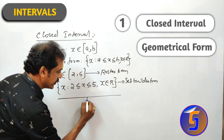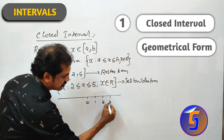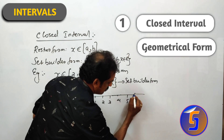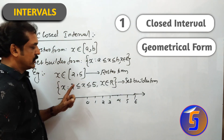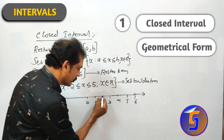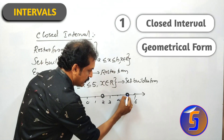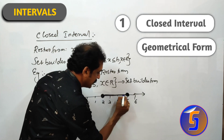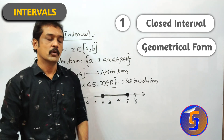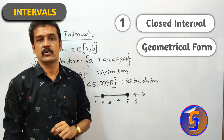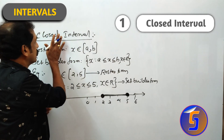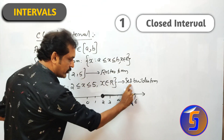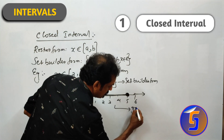This is the geometrical form. We draw a number line: 0, 1, 2, 3, 4, 5, 6, etc. We mark 2 and 5. In a closed interval, both endpoints are marked bold. So a closed interval has three forms: Roster Form, Set-Builder Form, and Geometrical Form.